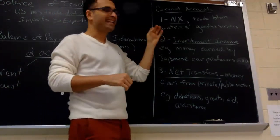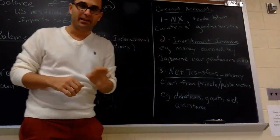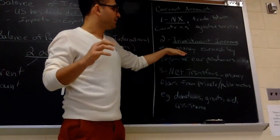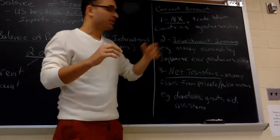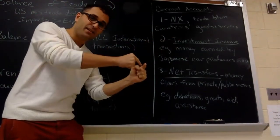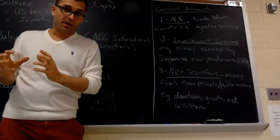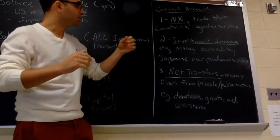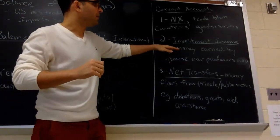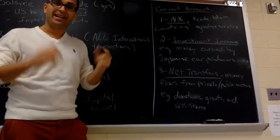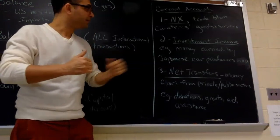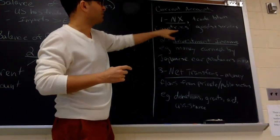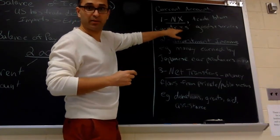The second part is anything that is investment income. For example, if you're a Japanese car producer producing cars in the United States — Toyota is a Japanese car company, let's say they produce in Michigan, in Motor City, in Detroit — the money that they earn in the U.S. is considered investment income. That gets included in the current account along with trade between those countries.